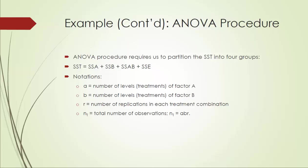In two-way ANOVA, we partition the SST — sum of squared total variations — into four groups: SSA, SSB, SSAB, and SSE. SSA is the sum of squared variations due to factor A alone. SSB is the sum of squared variation due to factor B alone. SSAB is the sum of squared variation due to the interaction of factors A and B. And SSE is the sum of squared variations due to all other factors, or white noise.